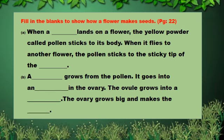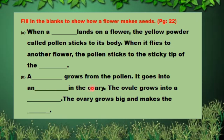Now students we will do fill in the blanks to show how a flower makes seeds. First I will read the paragraph: when a bee lands on the flower, the yellow powder called pollen sticks to its body. When it flies to another flower, the pollen sticks to the sticky tip of the carpel. A tube grows from the pollen. It goes into an ovule in the ovary. The ovule grows into a seed. The ovule grows big and makes the fruit.